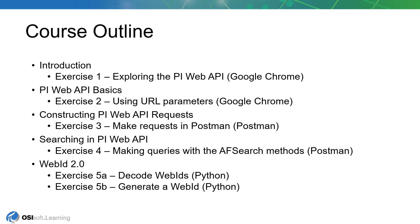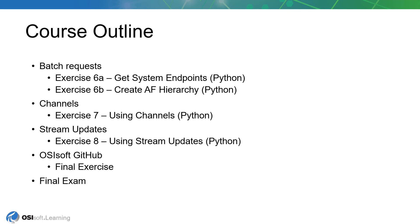This course is designed to start simple and gradually move on to more advanced features within the Web API. We'll begin by making simple read requests through a web browser, then move on to making requests that actually change data within the PI system using a tool called Postman. The last few exercises use Python scripts for more advanced tasks like generating Web IDs client side, executing batch requests, and subscribing to streaming updates. We'll finish by looking at samples on the OSIsoft GitHub and wrapping up with the final exam.